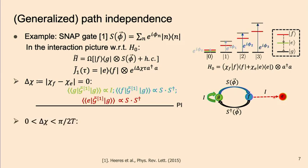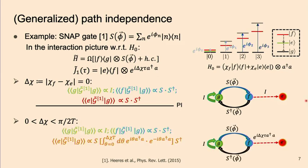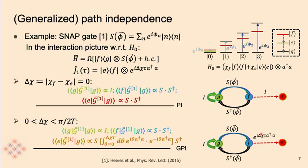Things get complicated when you don't have perfect chi matching. With a finite chi mismatch, you no longer have the PI property, because a single ancilla decay causes a jump-induced phase rotation on the bosonic mode that is not deterministic. But the point is that if the bosonic mode encodes a bosonic code that can correct small dephasing errors, then this operation is still GPI and therefore still fault-tolerant against those ancilla errors.